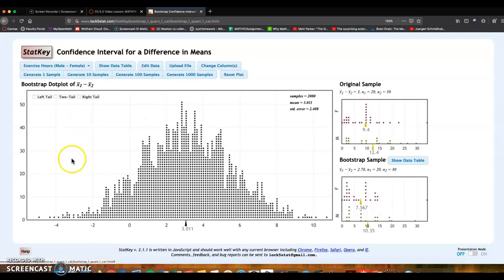But if we want to get a 95% confidence interval, we generate a couple thousand samples, we get that approximate normal curve or bell-shaped curve. Then you click on two tail here in the middle and make sure that says 95%.